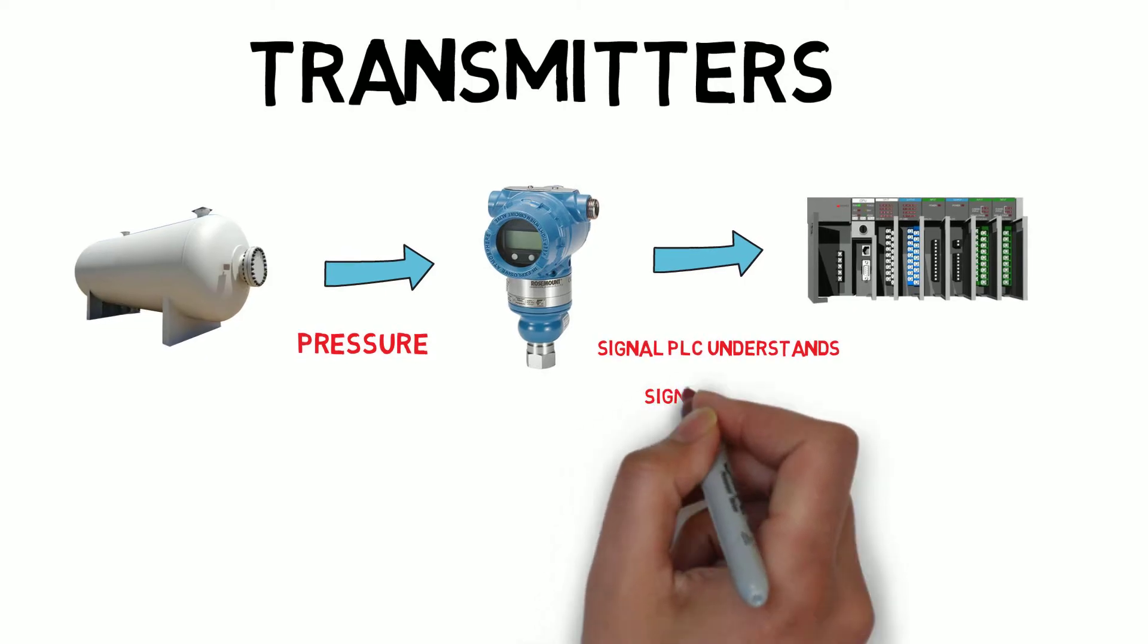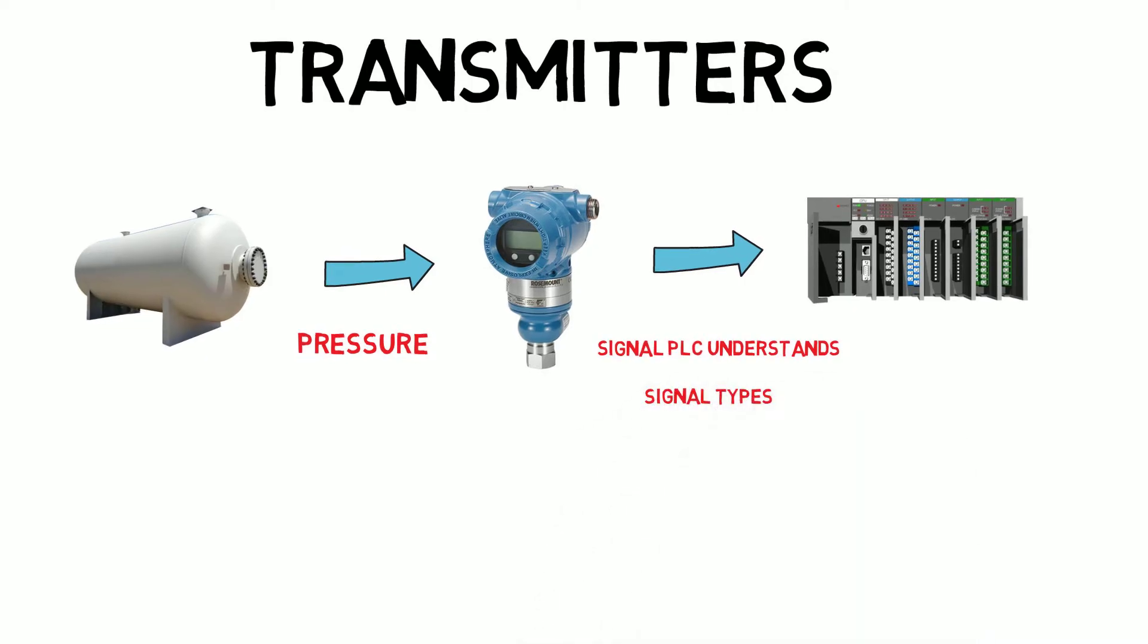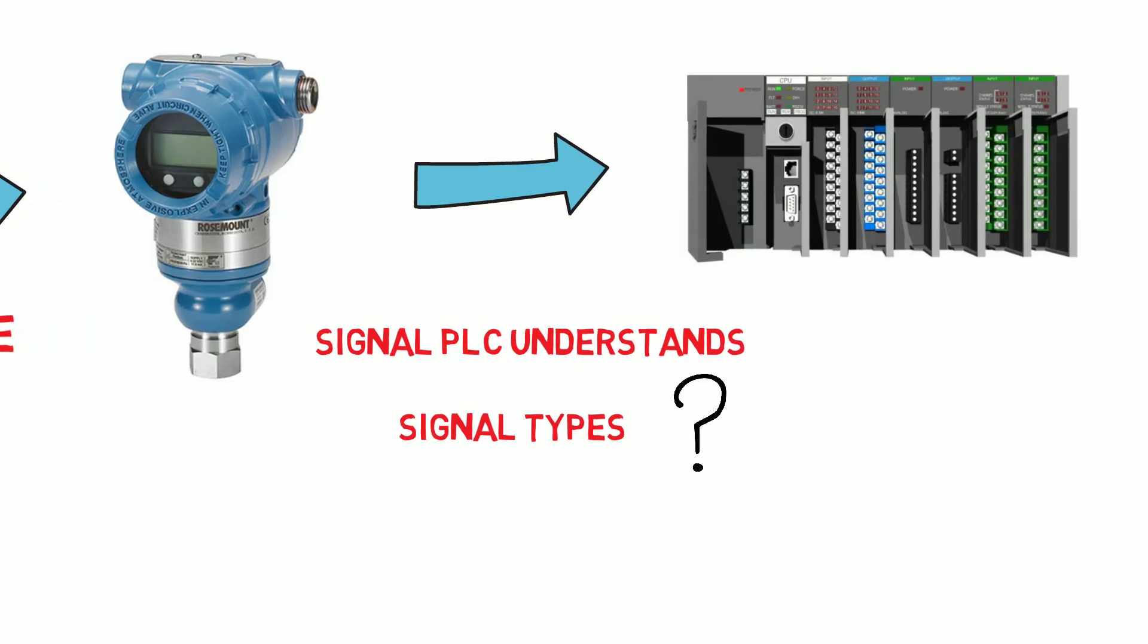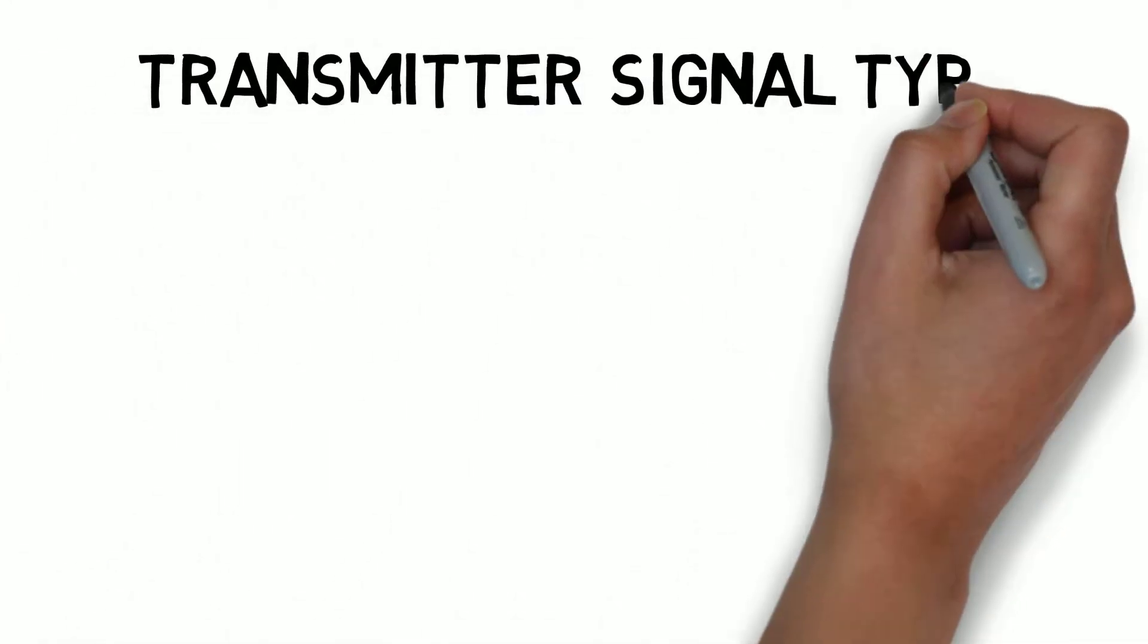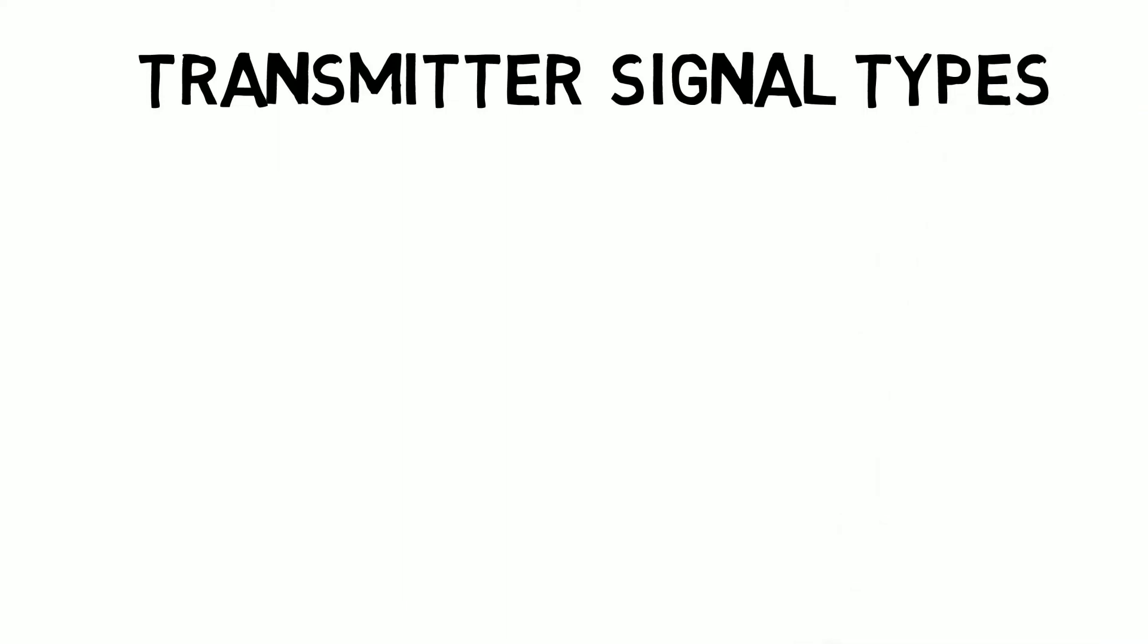Because industry has been evolving and changing for many many years, you are likely to find a wide range of different signal types that transmitters output. This will be dependent on the age of the site the equipment is installed in.